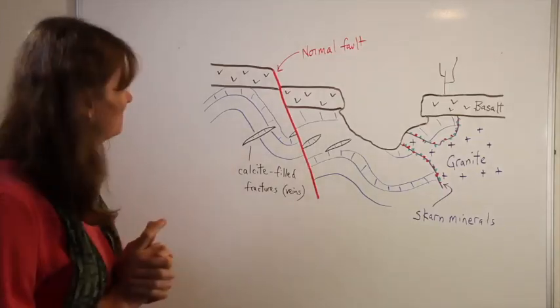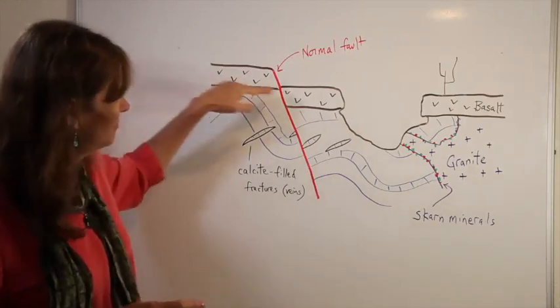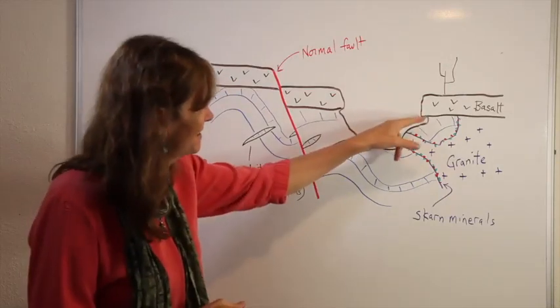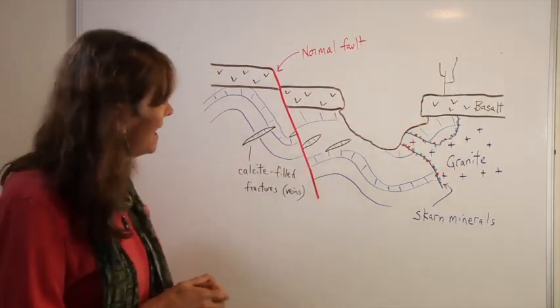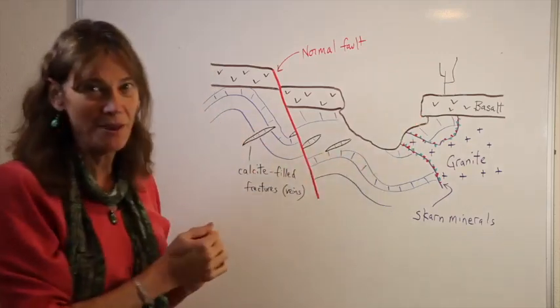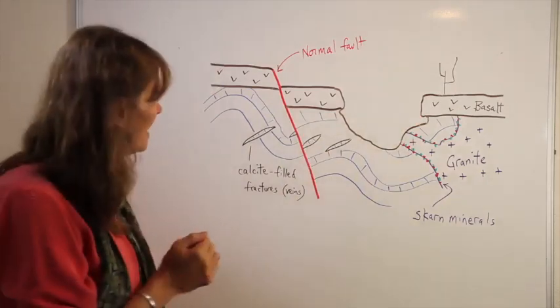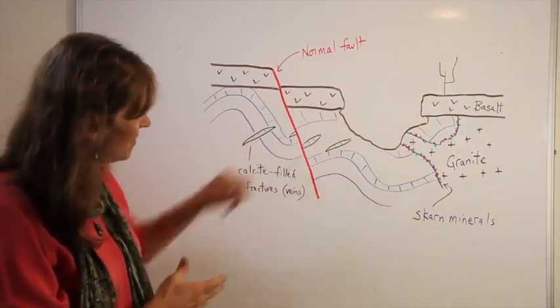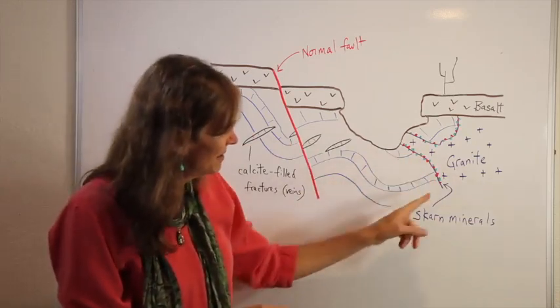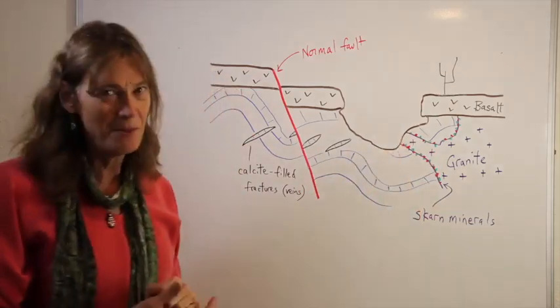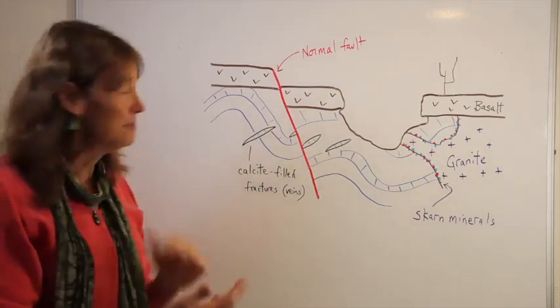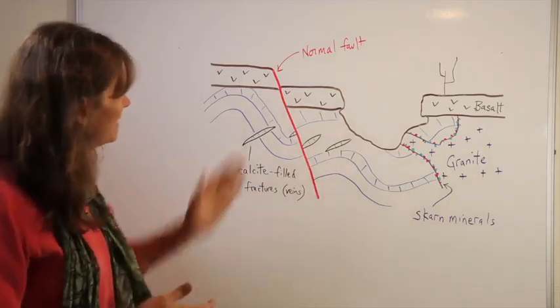Okay, consider this outcrop. We've got a basalt flow over the top. It's more resistant to erosion, so it kind of sticks out over the edge of the canyon here. And the main bedrock is this limestone in blue that you can see is folded. It's cut by calcite-filled fractures or veins, and it's also intruded by granite here, and these decorations are scarn minerals along the contact where there's been metasomatism. And it's cut by a normal fault.